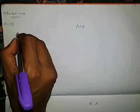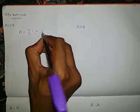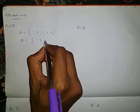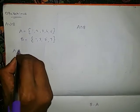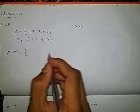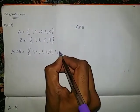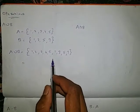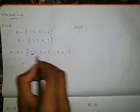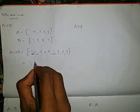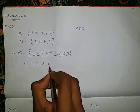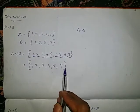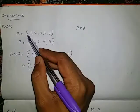For example, if set A contains 1, 2, 3, 4, 5 and set B contains 1, 3, 5, 7, we need to write the elements for A union B. First write all elements: 1, 2, 3, 4, 5 — A completed. Next B: 1, 3, 5, 7. We know in a set no element should be repeated. So 1 appears twice — write once; 2 once; 3 twice — write once; 4 once; 5 once; 7 once. So A union B = {1, 2, 3, 4, 5, 7} — the elements which are in A as well as B.